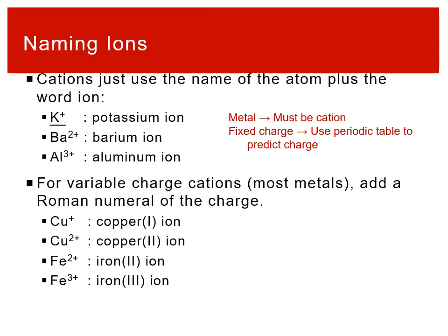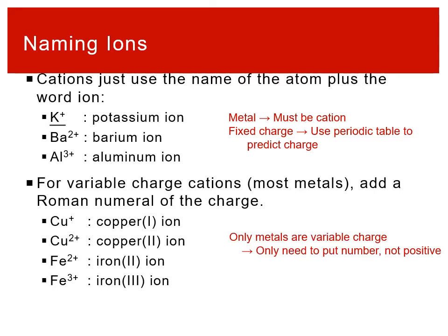When we have variable charge cations, which is most of the metals out there, we do need to include information on the particular charge. For copper, it can be either Cu+ or Cu2+. We would call them either copper one or copper two, using Roman numerals in parentheses right after the name of the atom. We don't say copper plus one — just one or two — because copper is a metal so it has to be a cation, meaning one implies plus one and two implies plus two. Same thing with iron: you can call it two or three.